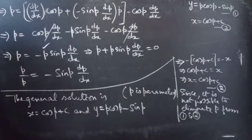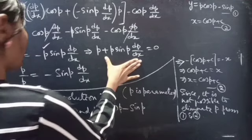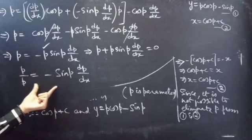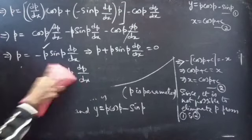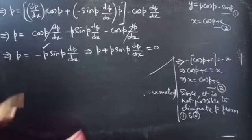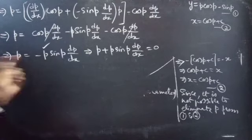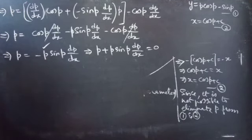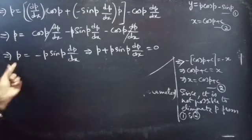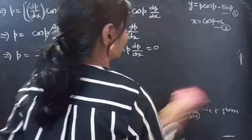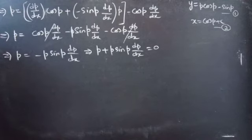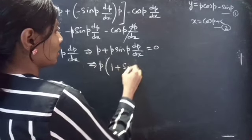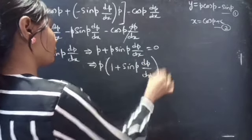This completes the main problem. Now let's talk about the alternative form of the equation. We can write this equation in two forms. We can take either just p to the LHS or the total term to the LHS. We have seen the general solution by taking single p to the LHS. Now let's see what happens if we take the total term to the LHS. We can factor out p, getting p times (1 plus sin(p)·dp/dx) equals 0.